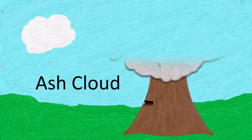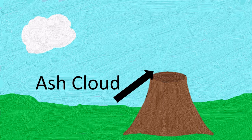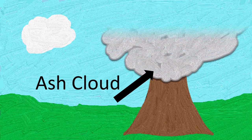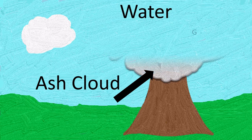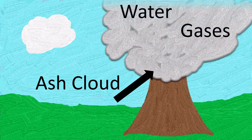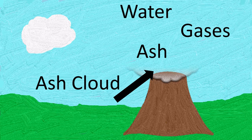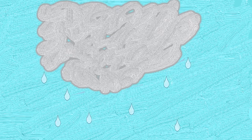Let's talk more about the ash cloud. What is it made of? There is water in the cloud and various gases. But the ash that makes up the cloud is made up of small pieces of rocks, minerals, and even glass. One way the ash cloud can affect the weather is because of these small particles — they are very good at attracting water droplets. When the water droplets become heavy, they fall to the ground as rain.